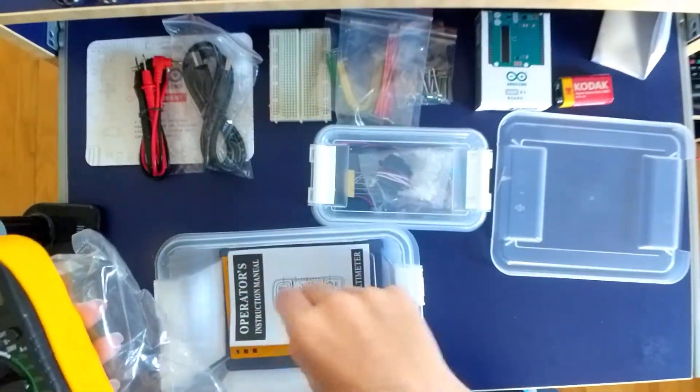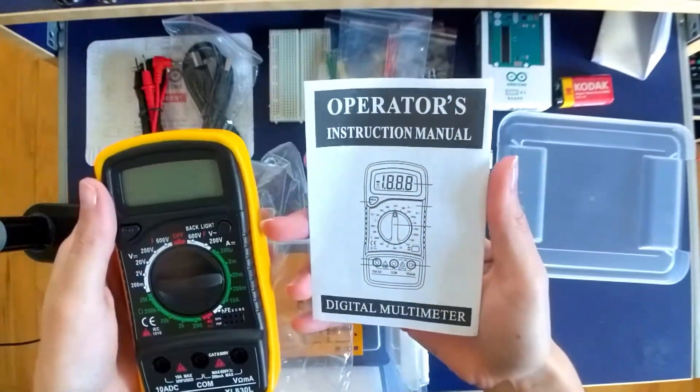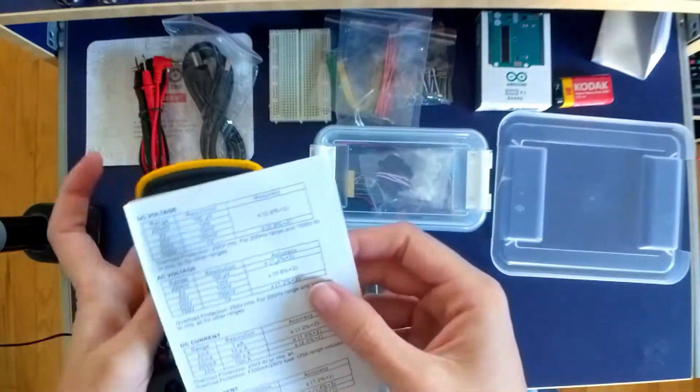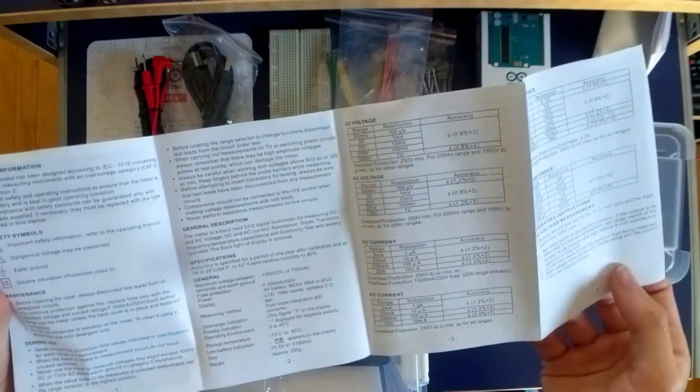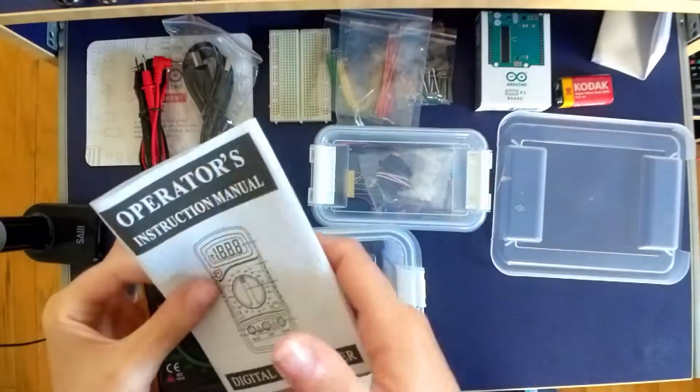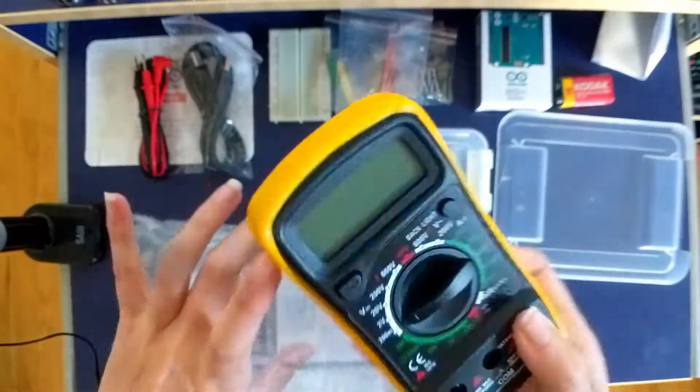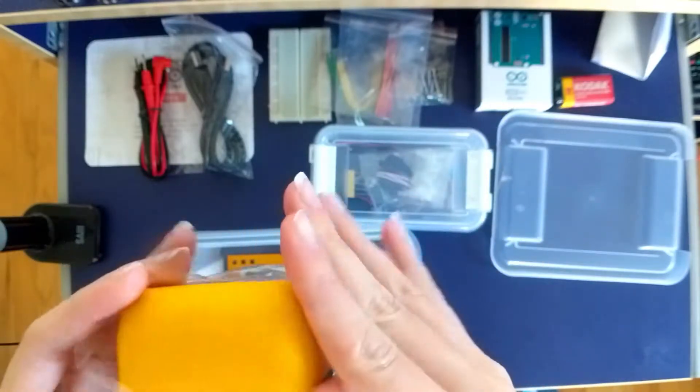Oh, perfect. An operation manual to the digital multimeter. Whatever that may be. All right. Well, definitely going to read that before I start anything. And again, all these lessons are online on the Arduino site. So I will be learning from there and learning what everything is.